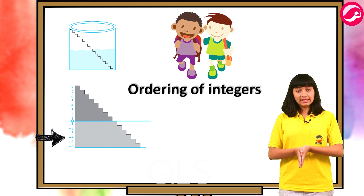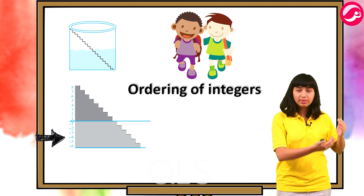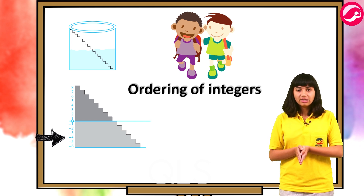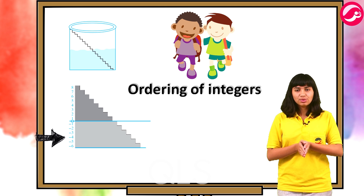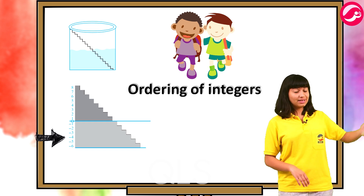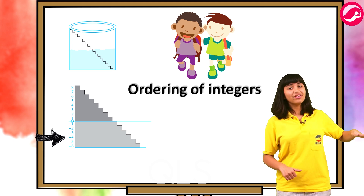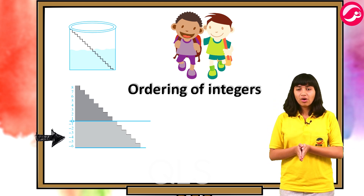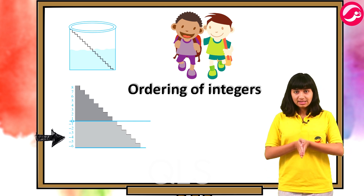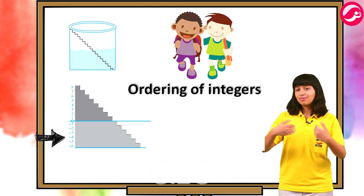Suddenly Raman remembered that at a big dam, the water level was marked below zero as well — zero ke bhi neeche numbers marked thay. Imran pointed out that there would be some distinction between numbers above and below zero. Neechle wale numbers negatively marked thay. Raman recalled that numbers below zero had a minus sign in front of them. So they marked one step below zero as minus one, two steps below as minus two, three steps below as minus three.